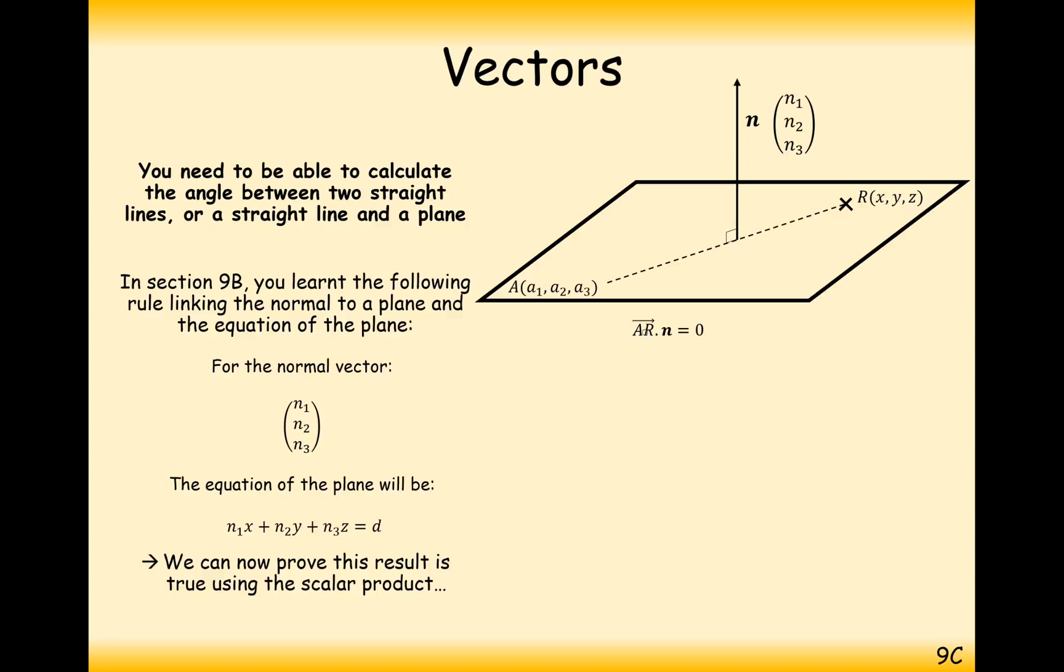So if we start off by working out what a to r is. Now, r is any point on the plane, so we have to still leave in x, y and z there. So it's going to be x minus a1, y minus a2, z minus a3 dotted with our perpendicular vector n1, n2, n3.